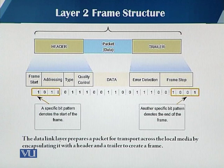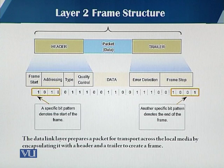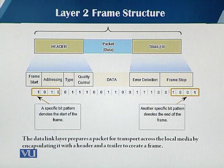That frame should have a frame start sequence, which is a sequence of bit patterns that denotes the start of the frame. Then there is addressing in the header, which tells you the source and destination address. There is also a type field, which tells you what type of upper layer protocol this frame is intended for. Then there is a quality control field, the actual data which we call the PDU — the Protocol Data Unit. And then we have the trailer, which contains error detection to ensure the frame is transmitted correctly without any errors.